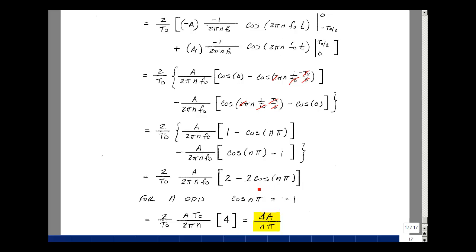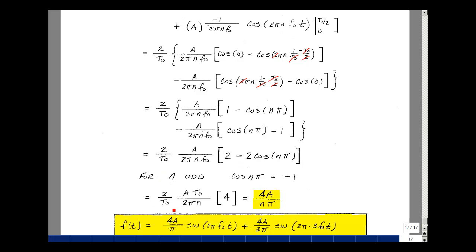Then I go back in here, and this is going to give me a minus, a minus 2, so I'm going to get a 4, and then bring this term down over here. Get some cancellation. I get the 2s canceling. I get the T0s canceling. And I'm left with 4A over nπ.